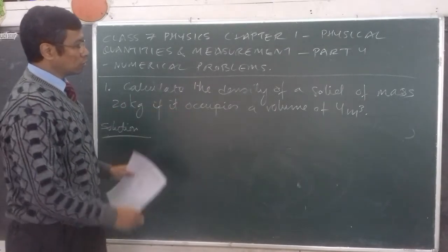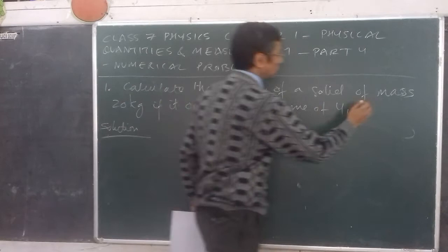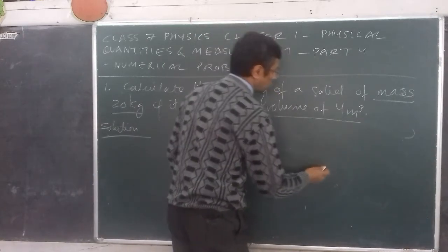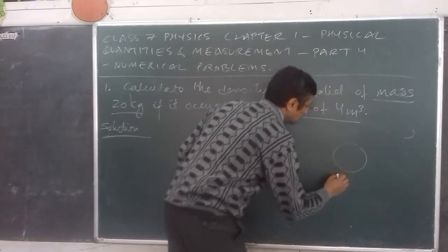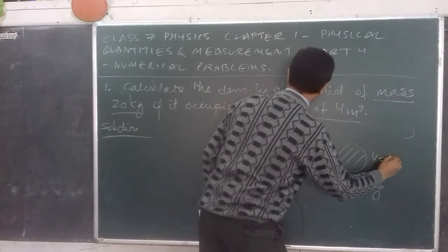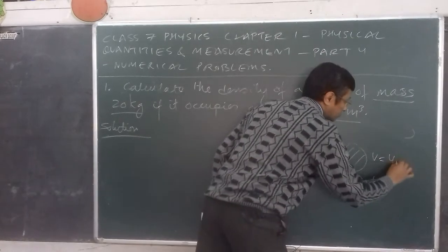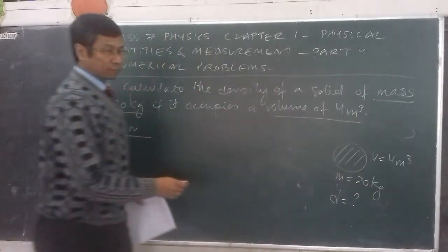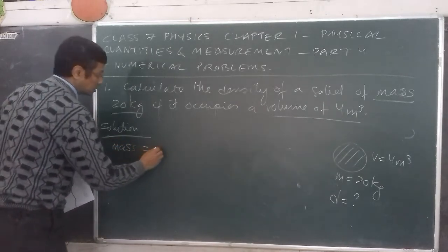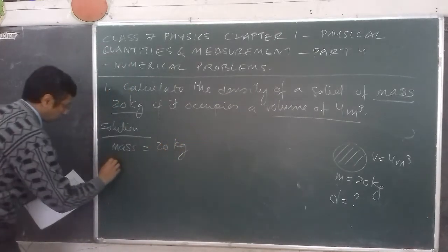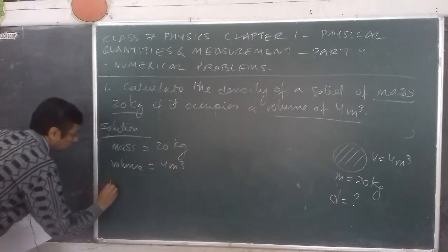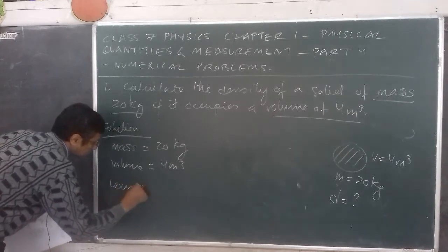If it occupies a volume of 4 meter cube. From the question we can see that the mass of the solid is given as 20 kg and it occupies the volume of 4 meter cube. So the mass is 20 kg and the volume is given as 4 meter cube, and we have to calculate the density.